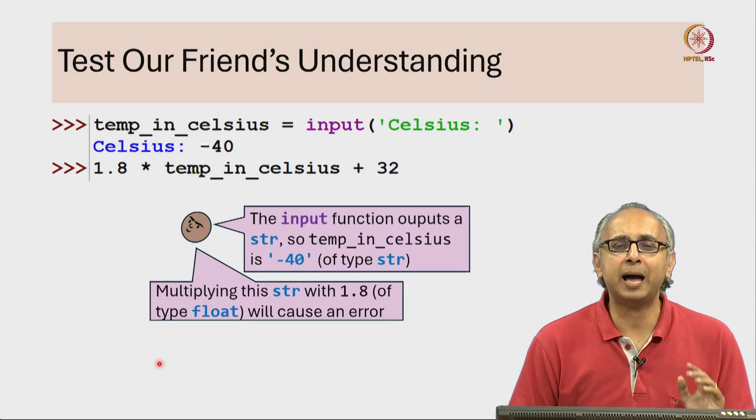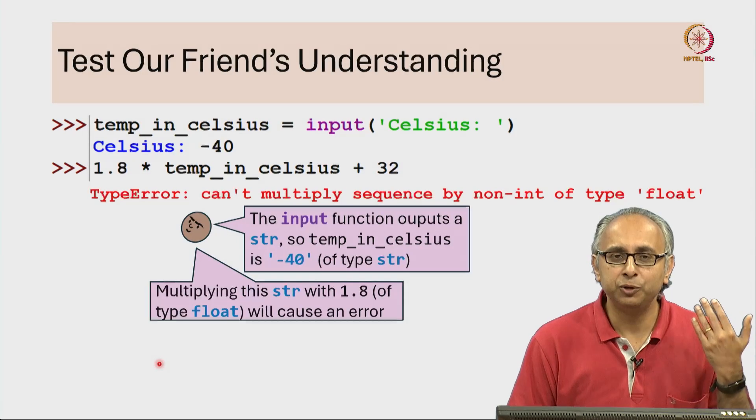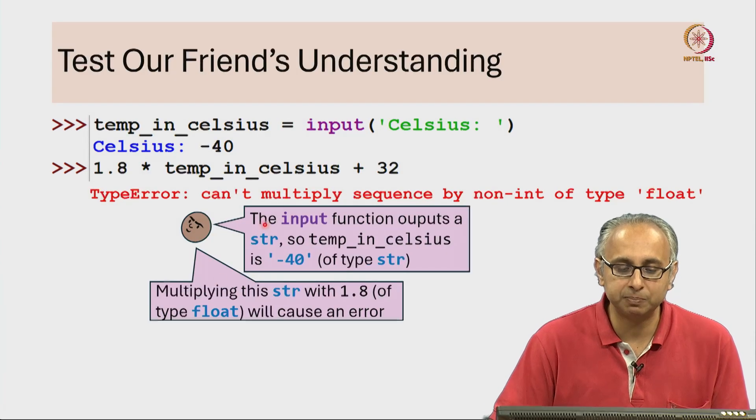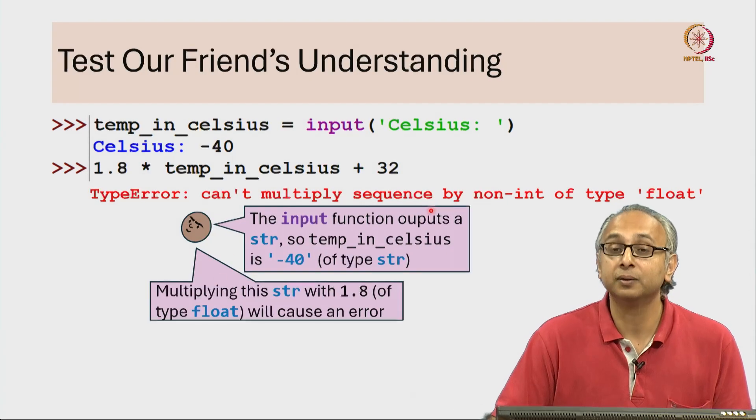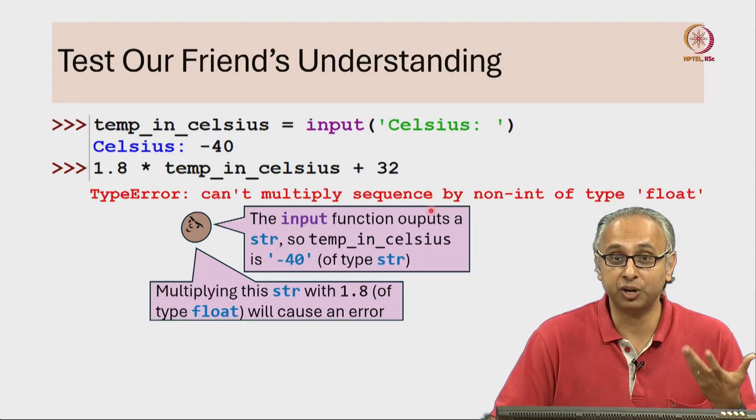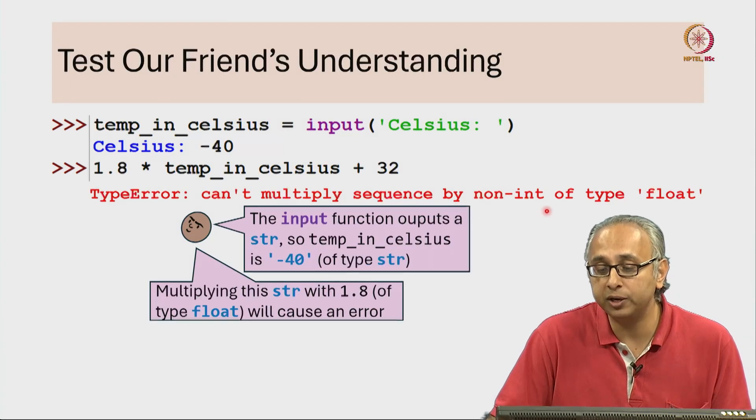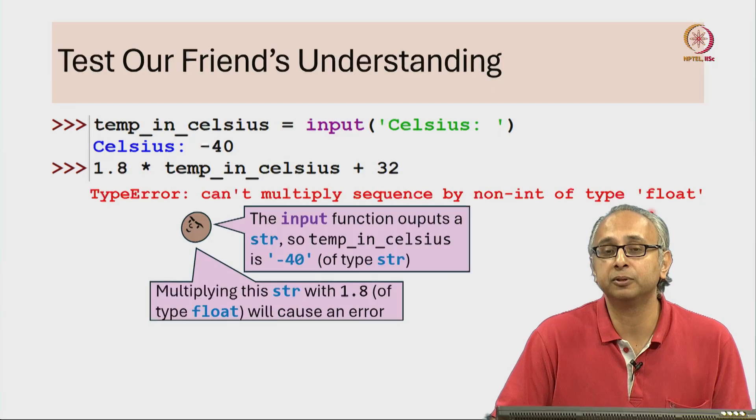It turns out our friend is absolutely correct. When you press enter you will get an error that says you can't multiply a sequence. A string is in general a sequence - you cannot multiply a sequence by a non-int of type float.